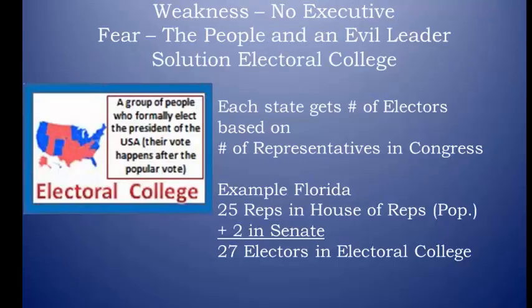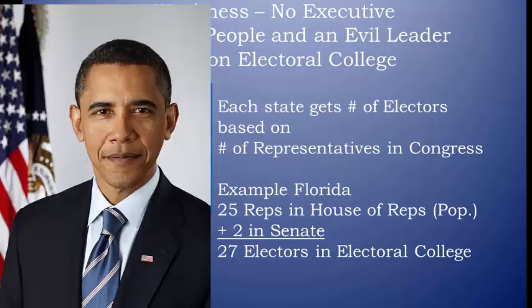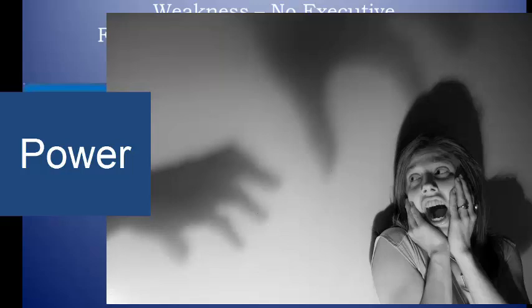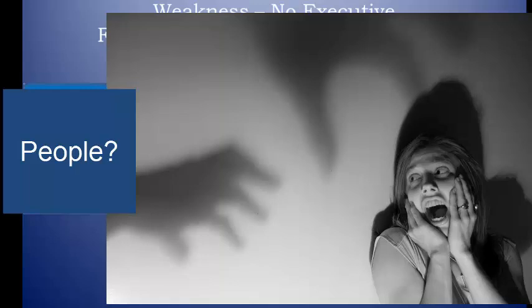The change to the Articles that caused the most anxiety was the creation of an executive. After all, having one person with a lot of power in the form of a chief executive or president sounded an awful lot like a king. Fear of power is a central theme throughout this year. But there was another fear at the convention, and that was fear of the people.